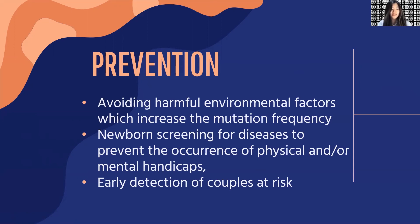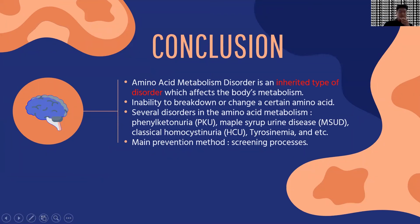In conclusion, amino acid metabolism disorder is an inherited type of disorder passed from parent to child through genes, affecting body metabolism. This disorder gives people a condition of being unable to break down or change a certain amino acid. Several disorders exist in amino acid metabolism, such as PKU, MSUD, HCU, tyrosinemia, and others. These disorders occur in three key phases: the body's inability to break down amino acids, its inability to detoxify the toxic products of amino acid metabolism, and the excessive accumulation of amino acid metabolism products.